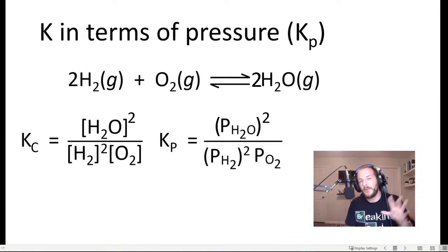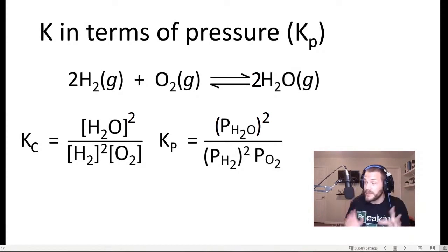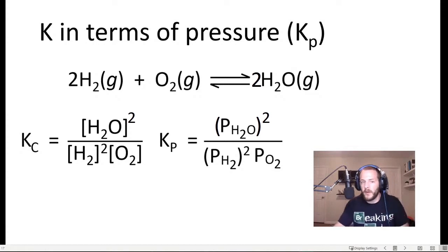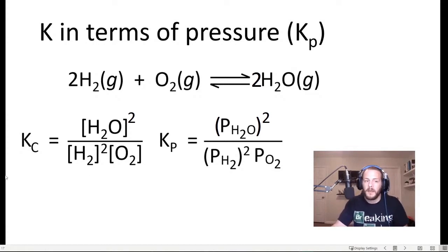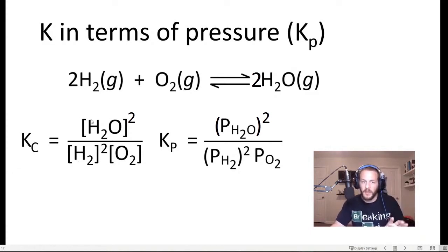So far, we've talked about how to express the equilibrium constant in terms of concentration. However, it turns out that you can also express the equilibrium constant in terms of pressure. So if we return back to the example that we started with in the very beginning, where we have hydrogen and oxygen reacting together to form water, the equilibrium constant for that one was concentration of water divided by concentration of hydrogen squared times the concentration of oxygen. We can be more specific and call that K sub C.